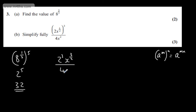This now is over 4x squared. 2 to the power of 3 is going to give me 8. So we have 8x to the 3 over 2 divided by 4x squared.